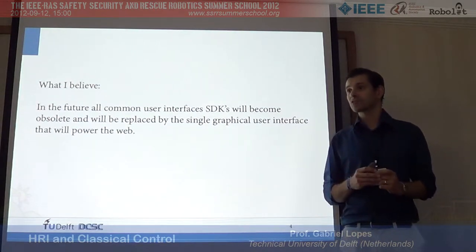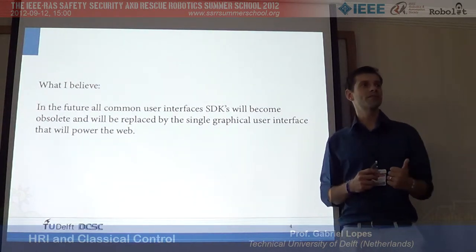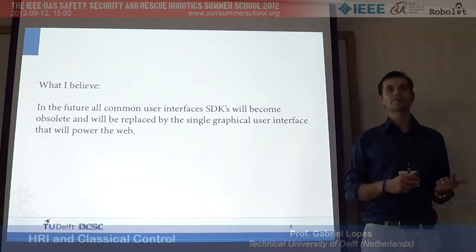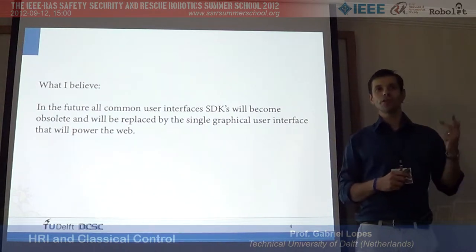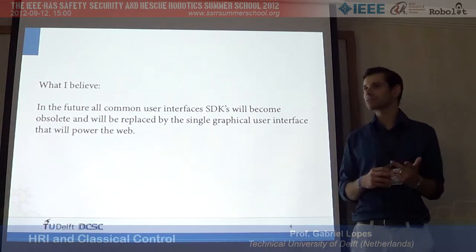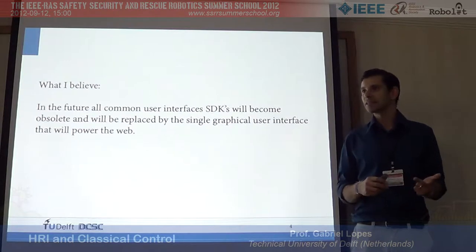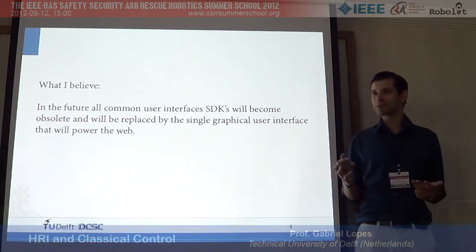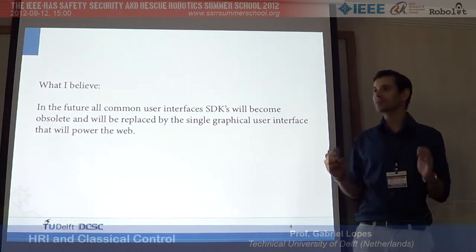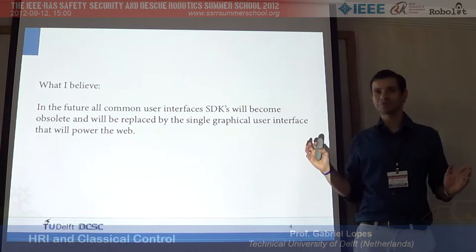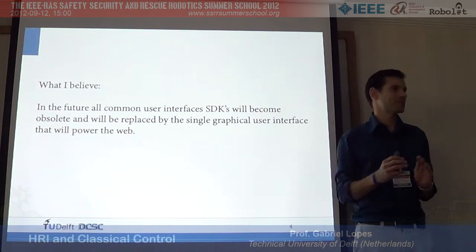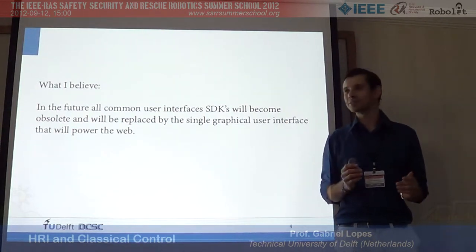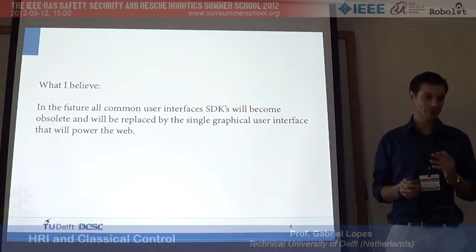This is what I believe: in the future, all user interface SDKs will become obsolete. The only SDK we'll have available is what powers the web. KDE will disappear, GNOME will disappear, Windows graphics libraries will disappear, Mac Aqua will disappear, and only HTML will survive. This is my prediction — you may be wrong, but that's what I think is going to happen.